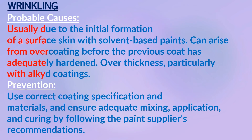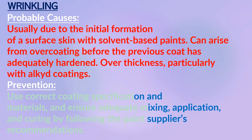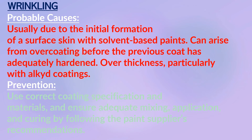Wrinkling: the development of wrinkles in the paint film during drying. Probable causes: usually due to the initial formation of a surface skin with a solvent-based paint; can arise from overcoating before the previous coat has adequately hardened, or over-thickness, particularly with alkyd coatings. Prevention: use correct coating specification and materials, and ensure adequate mixing, application, and curing by following the paint manufacturer's recommendations.